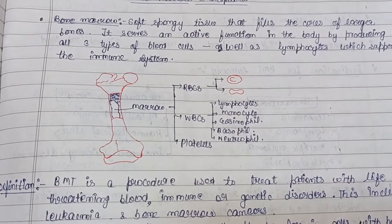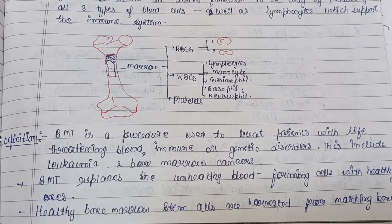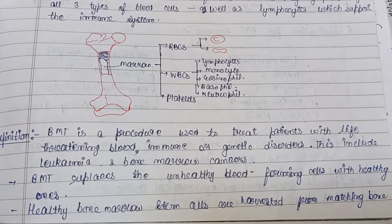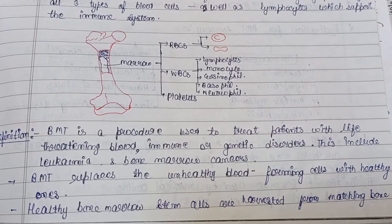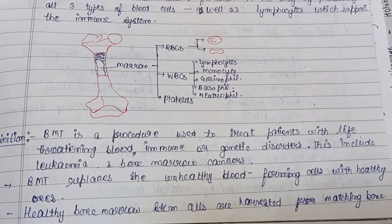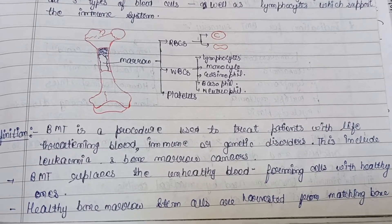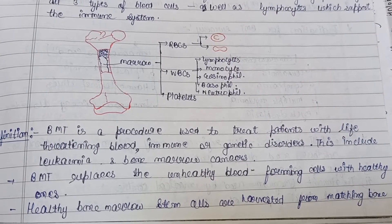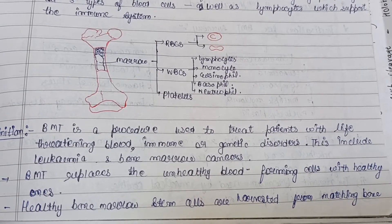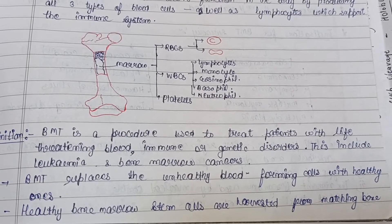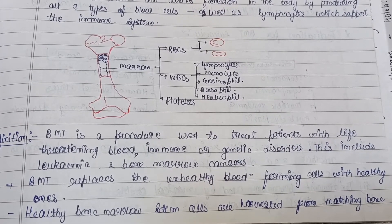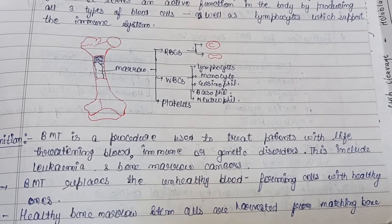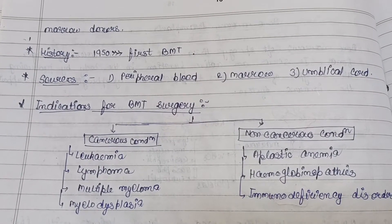The definition of bone marrow transplantation: BMT is a procedure used to treat patients with life-threatening blood, immune, or genetic disorders. This includes leukemia and bone marrow cancers. In the BMT procedure, unhealthy blood-forming cells are replaced with healthy ones. Healthy bone marrow stem cells are harvested from a matching bone marrow donor.